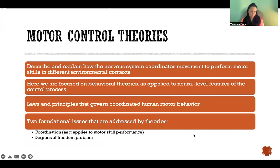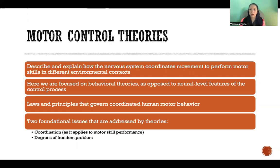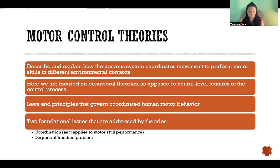Motor control theories describe and explain how the nervous system coordinates movement to perform motor skills in different environmental contexts. There are different ways to theorize in motor control. Here we are not really focusing on the neural level theories of the control process — we're looking more at behavioral theories. The neural level theories are more physiological neuroscience type theories, whereas here in motor control we're focusing on behavioral theories.